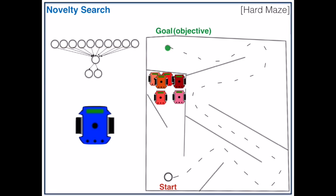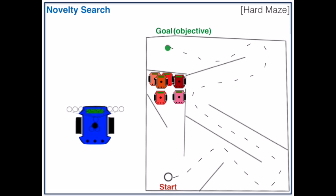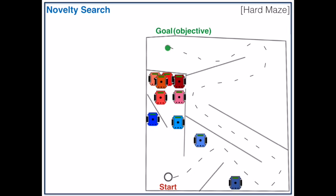Now how would novelty search solve this problem? We have the same setup, but the novelty search robots are going to do things a little bit differently. The blue robots are allowed to run in the maze and are rewarded for how different their final x and y positions are from previous robots. By always doing something different, the robots wind up exploring the whole maze and find the objective.